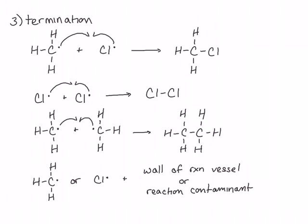The termination step typically does not happen until the end of the reaction because the concentration of radicals is always very low. It is much more likely that a radical will contact another reactive molecule, such as methane, rather than another radical — until the end of the reaction when the concentration of reactants is very low. Then it becomes much more likely for a radical to encounter another radical, a wall, or a contaminant, ending the reaction.